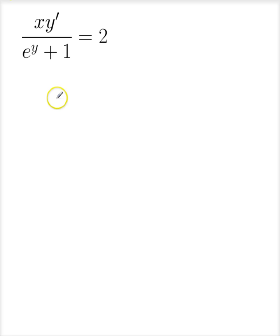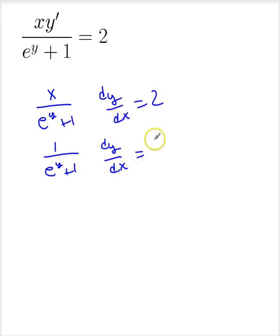This one's a little bit messier, but not really. I'm going to rewrite this as x divided by e^y plus 1 dy/dx is equal to 2. Now, I'm going to get all of the x terms to the other side.